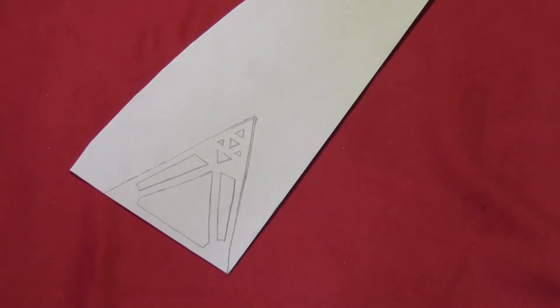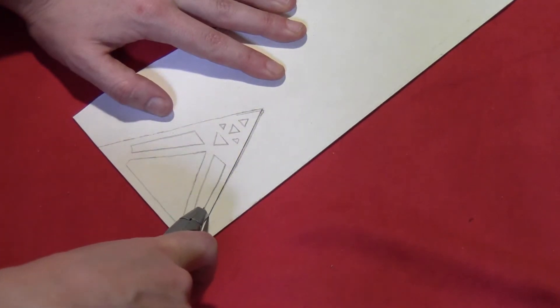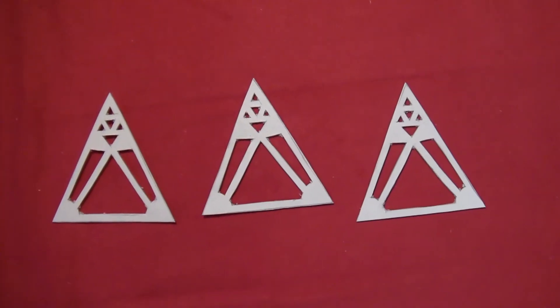Then take either a pair of scissors or an exacto knife or utility knife if your cardboard's really hard, and cut out all the pieces and all the little designs.